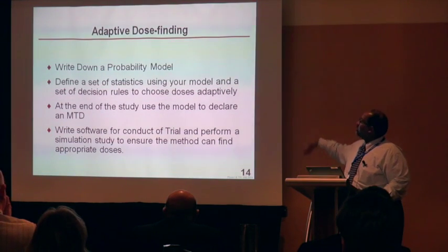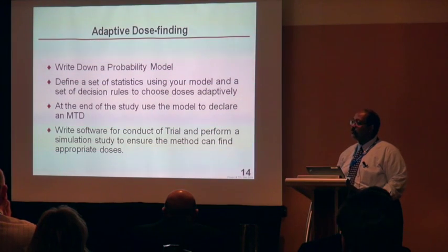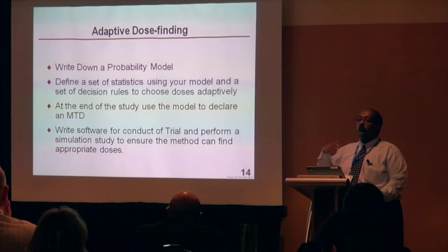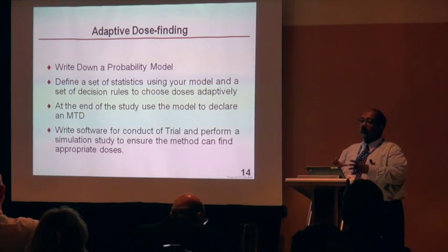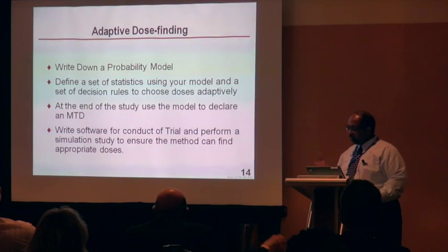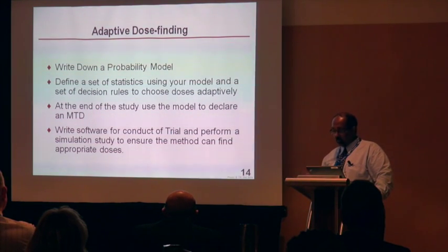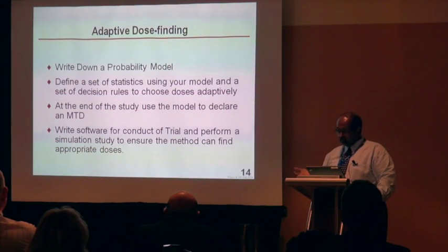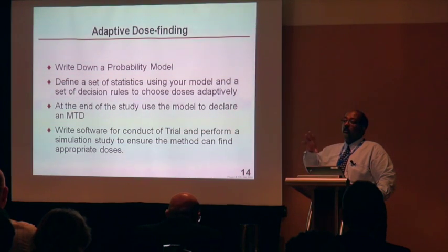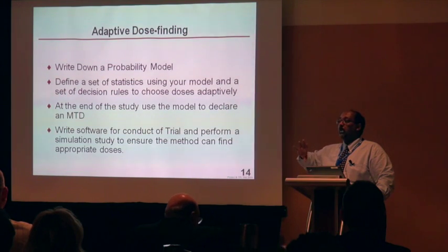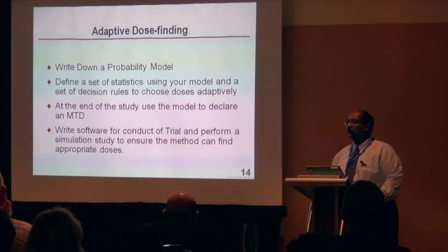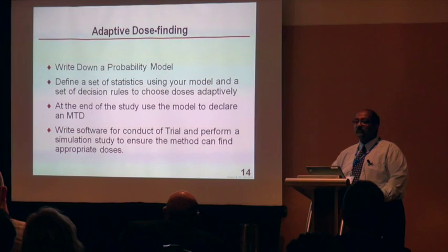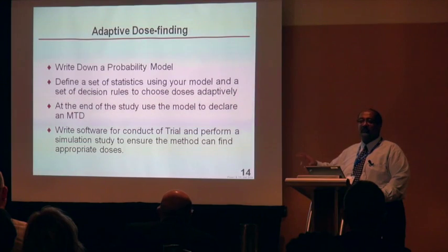There are about seven different considerations in developing a model-based approach. You can focus on doing the methodology better, look at efficacy and toxicity in a combined way, look at multiple combinations, model severity or schedules, or model multiple cycles — since phase one settings typically only look at the first cycle. Any combination of these areas can result in a statistical paper, and there are over 400 papers in dose-finding. It's essentially a cottage industry — you take different combinations and write a paper.